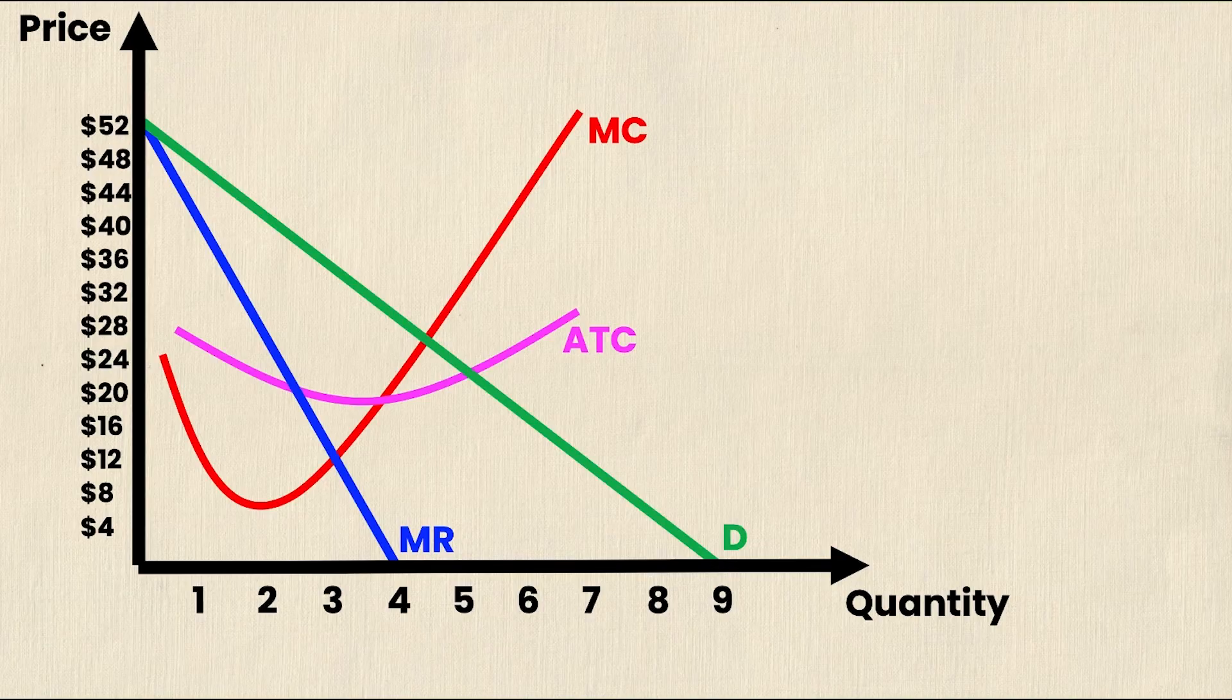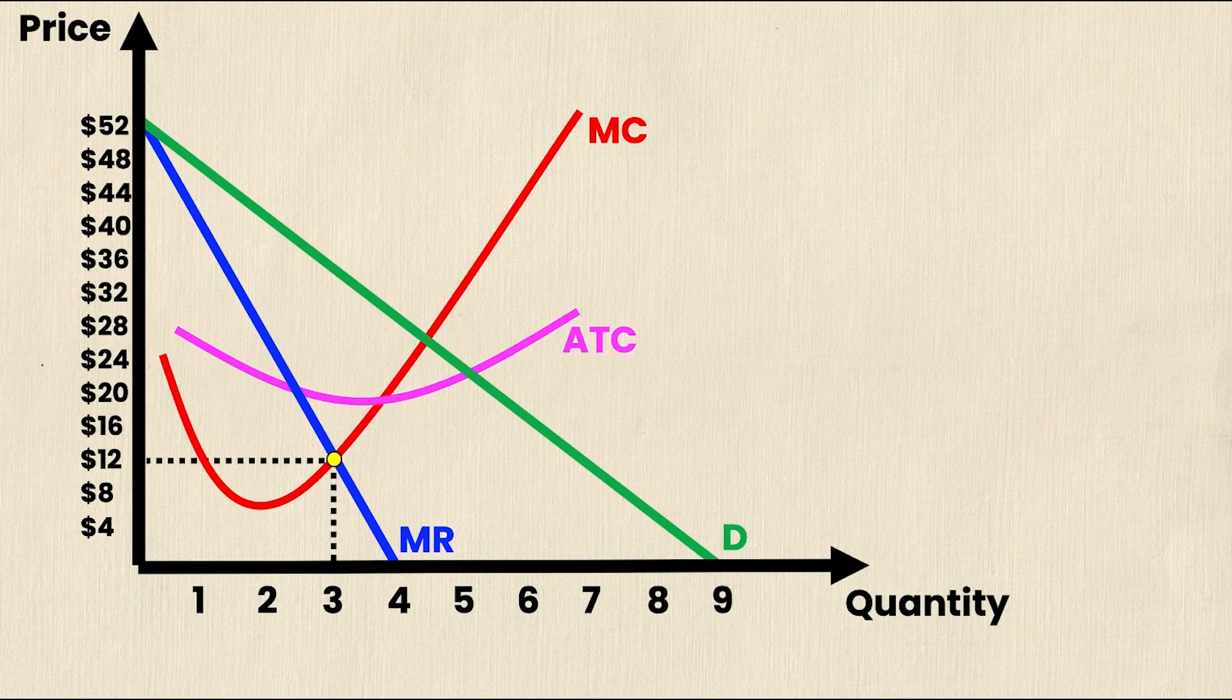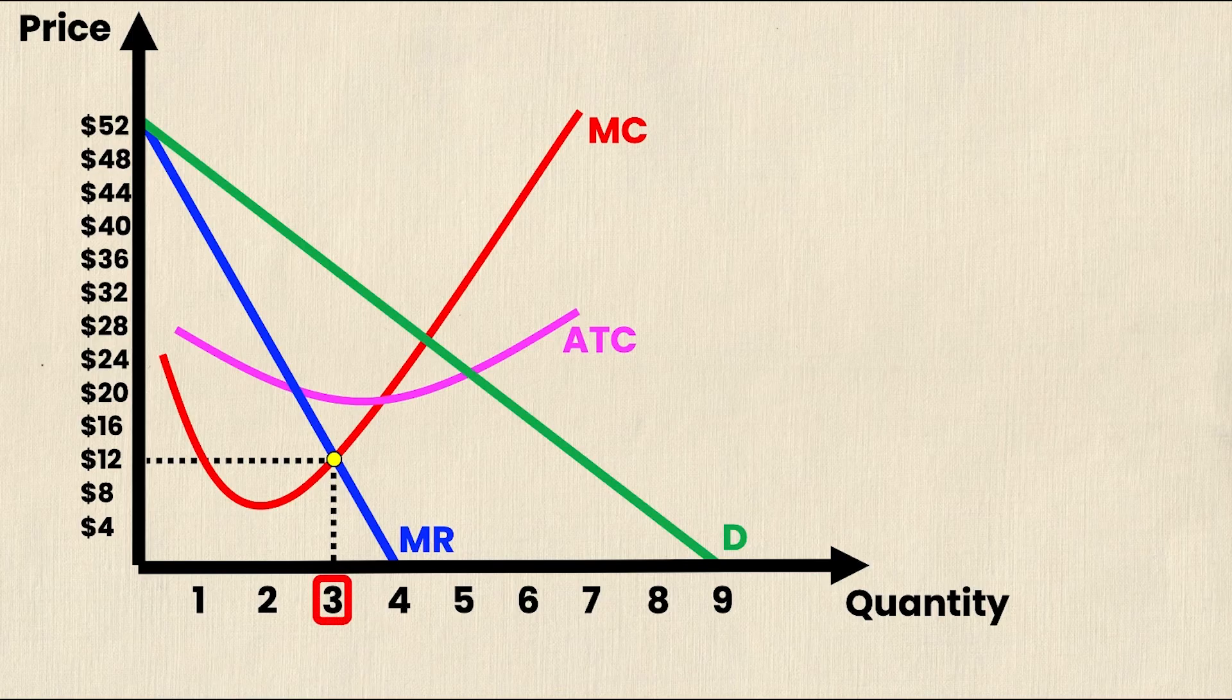So to start, we want to see where the marginal revenue curve intersects with the marginal cost curve. And we can see that that is a point where the quantity is equal to 3 and the price is equal to 12.